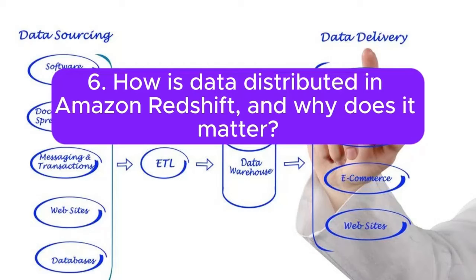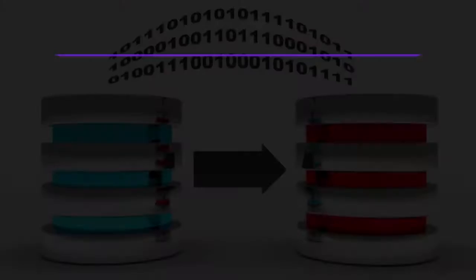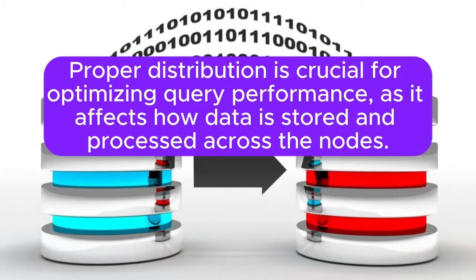Question 6: How is data distributed in Amazon Redshift, and why does it matter? Answer: Redshift distributes data across compute nodes using a key-based, round-robin, or all-distribution method. Proper distribution is crucial for optimizing query performance, as it affects how data is stored and processed across the nodes.